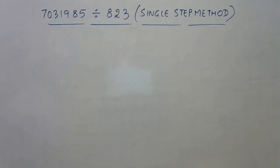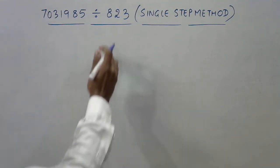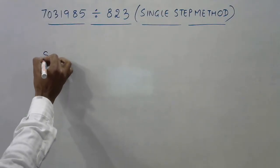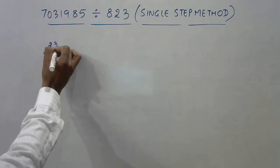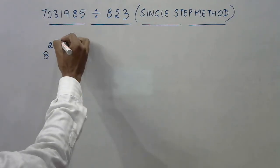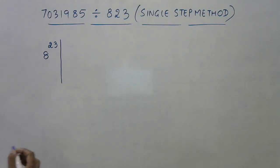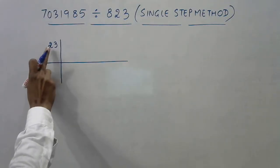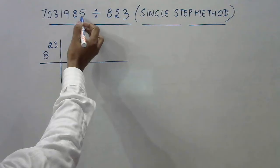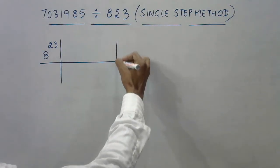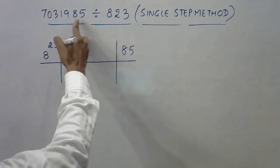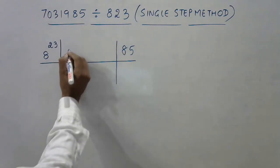So let's see the method. 7031985 divided by 823. The first thing is the divisor, that is 823. I need to write this divisor with the first digit 8 and 23 on top like this, and I'll separate it out by this vertical line, then draw a horizontal line. Since I have written two digits here on the top, the last two digits of the dividend will come on the right-hand side of this vertical line. This is 85 as the last two digits, and now I have 70319 in the middle.